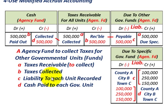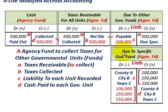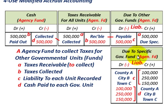Remember the liability we set up to record those taxes. Now we look at the liability to each unit recorded. We had 'due to other governmental funds' credited for $500,000 — now we remove that by debiting it for $500,000. We then set up specific accounts due to each governmental fund: county $100,000, city $250,000, township $150,000. We've taken the general liability and transferred it to accounts due to each specific governmental fund.